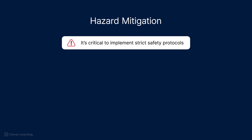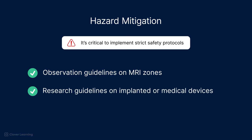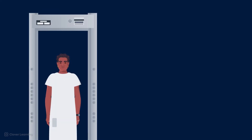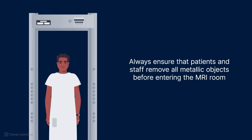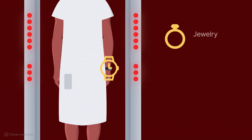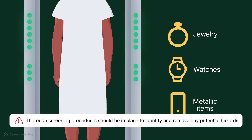To mitigate projectile hazards, it's critical to implement strict safety protocols, like observation guidelines on MRI zones and research guidelines on implanted or medical devices. Additionally, technologists should always ensure that patients and staff remove all metallic objects before entering the MRI room. This includes jewelry, watches, and any metallic items in pockets. Thorough screening procedures should be in place to identify and remove any potential hazards.